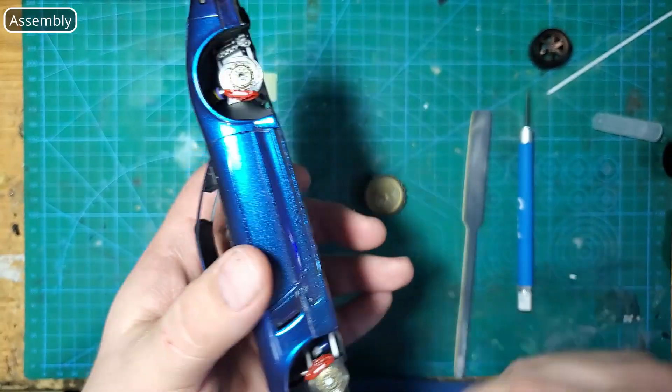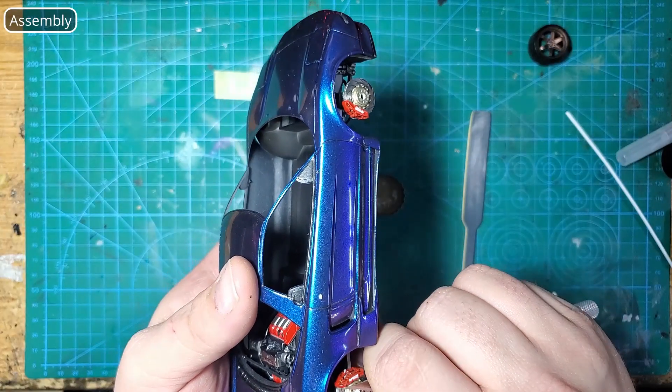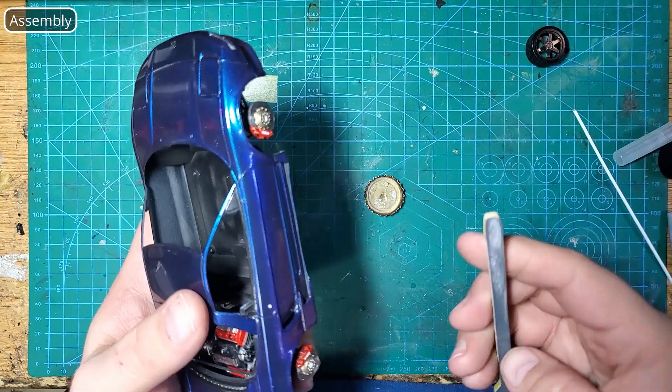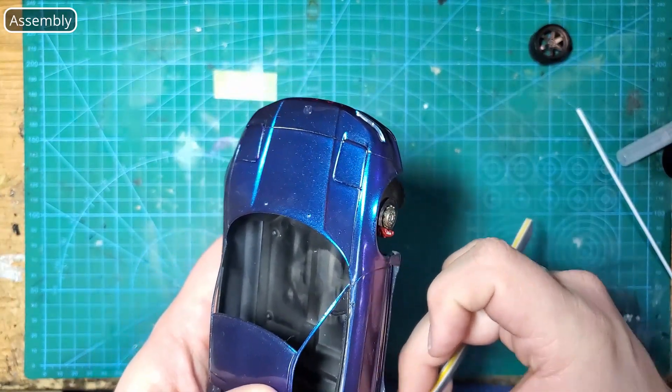Sorry the last part is a bit out of frame but after gluing the small piece of plastic rod in place I shaved it down flat with a hobby knife and gave it a quick sanding to flatten everything out, make sure it's really smooth and now everything's ready to glue the wheel in place.